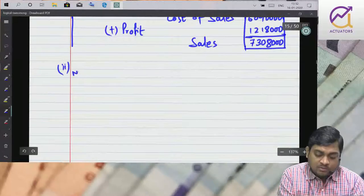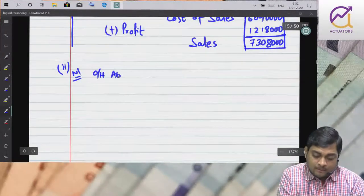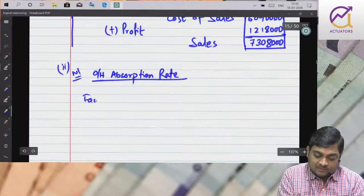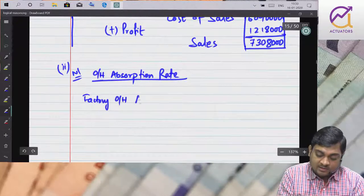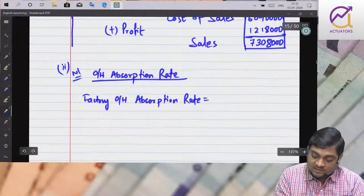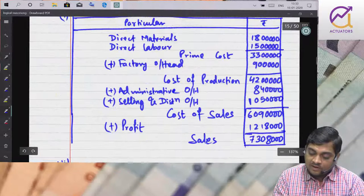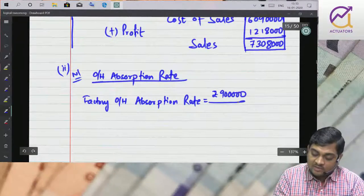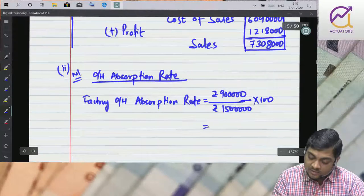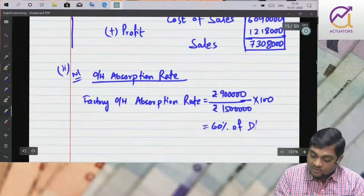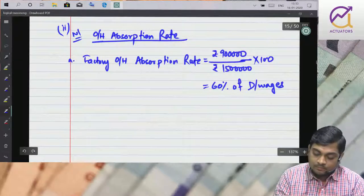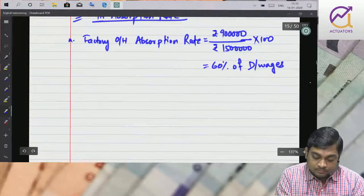Administrative overhead is 8,40,000. Add to the table. This is how much? 42,00,000 plus 8,40,000 plus 6,90,000 and then 12,08,000. So this is 73,80,000. Is that fine? Now on this cost sheet basis, we have to take part 2. In part 2, we have to take different recovery rates. This is my main cost sheet, simple add to it.